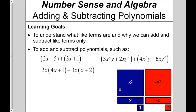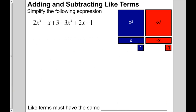In this video we're going to use algebra tiles to help us visualize what we're going to be doing. Here we have this expression we're asked to simplify: 2x squared minus x plus 3, minus 3x squared plus 2x minus 1.